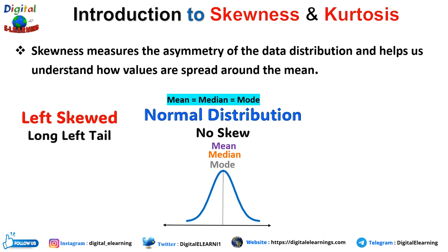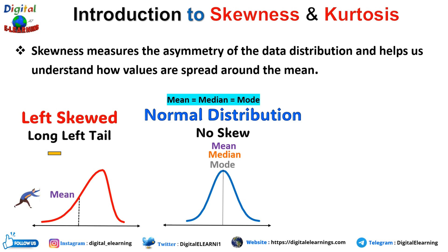Now let's switch to the left skewed distribution, which has a long negative tail. This is also known as negatively skewed, because it has a long tail in the negative direction on the number line. The mean is also to the left of the peak, followed by the median and then the mode. The left tail is longer or fatter than the right, so the mean is less than the median, and the mode is greater than both mean and median.